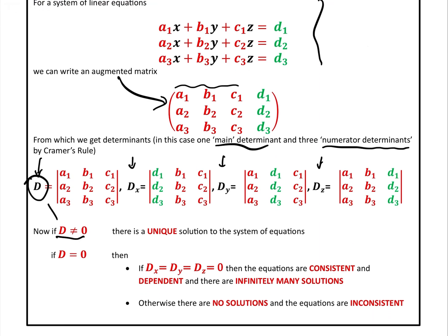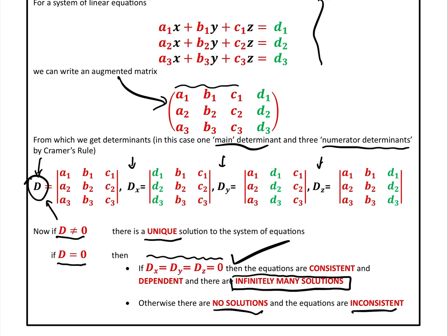If D is not 0, then there is a unique solution — but we're not covering that today. Now if D does equal 0, then one of two things will happen. If the numerator determinants are also all 0, then the equations are consistent and dependent and there are infinitely many solutions — this is the case we are dealing with today. If Dx, Dy, Dz do not all equal 0, then there are no solutions and the equations are inconsistent, which we're not dealing with today.